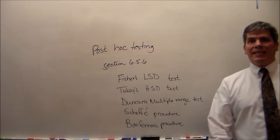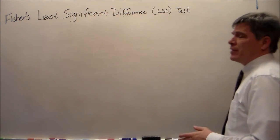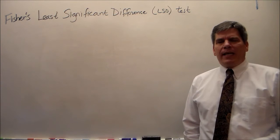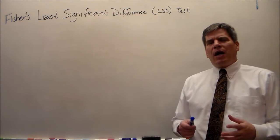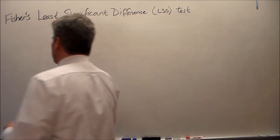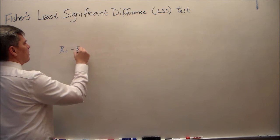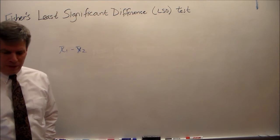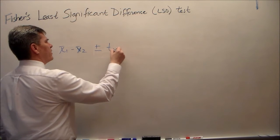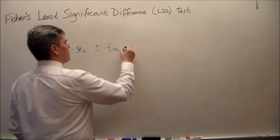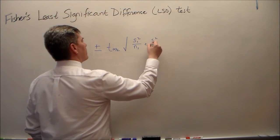The first multiple comparisons test is Fisher's LSD test, the least significant difference test. It's based on multiple t-tests. The confidence interval for a two-sample t-test is x̄₁ minus x̄₂, plus or minus t of alpha over 2 times the square root of s₁² over n₁ plus s₂² over n₂.